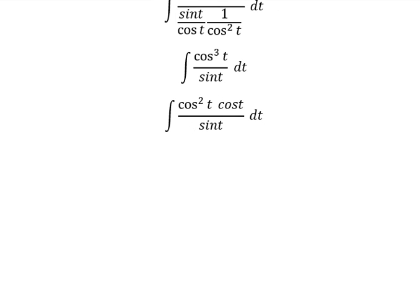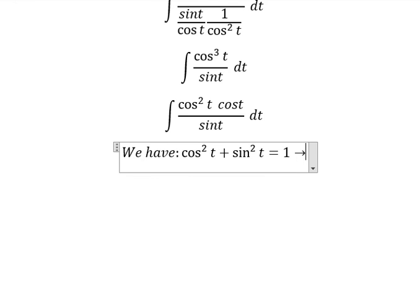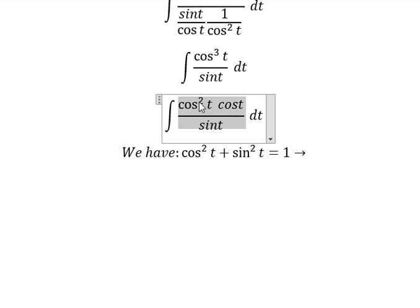Next, we have the formula in here. That is cos t squared plus sin t squared equals to number 1. So we have cos t squared in here.